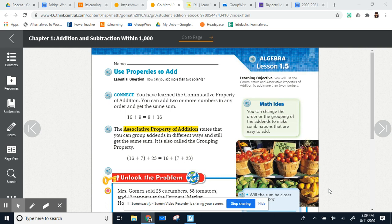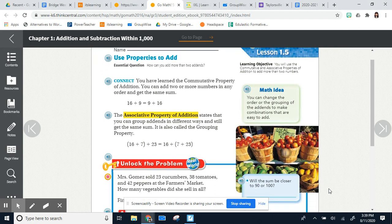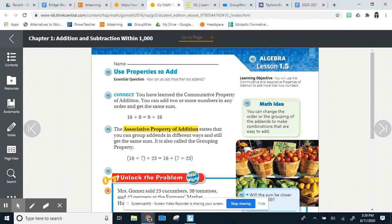Okay third grade, this is Tuesday's math lesson. We are on lesson 1.5, which begins on page 29 in your go math books. I would suggest that you follow along in your book and just use it to help you as you do your homework today. So we are now using math properties to add. You probably saw the word algebra and thought oh no, but it's really not as bad as you think, I promise.